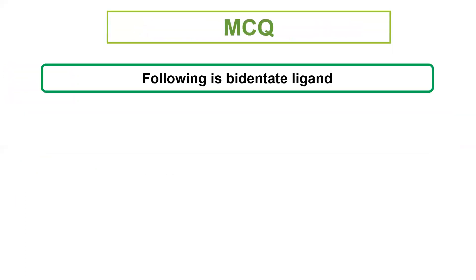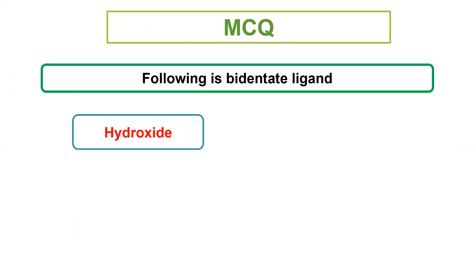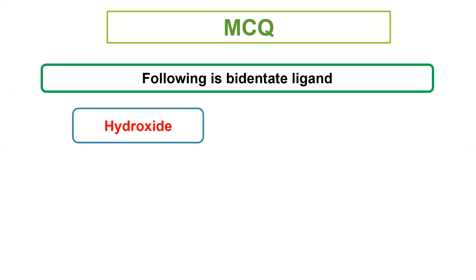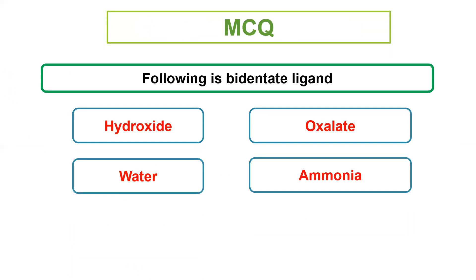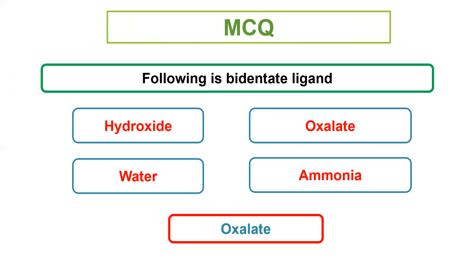MCQ: Following is a bidentate ligand. Bidentate ligand means 2 electron pairs are donated. Hydroxide donates 1 electron pair. Oxalate donates 2. Water donates 1. Ammonia donates 1. So oxalate is the answer — oxalate is a bidentate ligand.